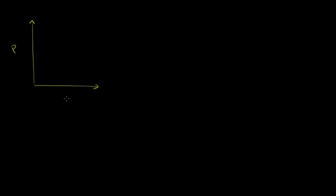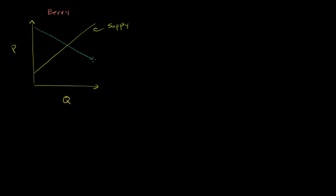So let's say this is the price axis and this is the quantity axis. Let's say that we are running some type of a berry farm. This is our supply curve, and this is our demand curve.